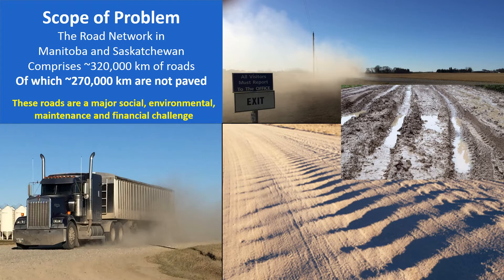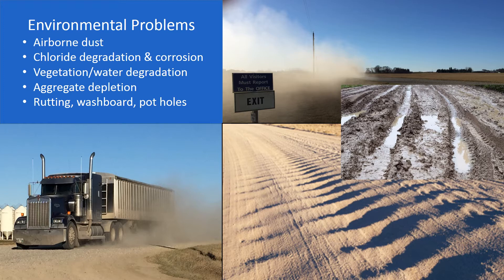As an example of the scope of the problem, the road network in Manitoba and Saskatchewan comprises approximately 320,000 kilometers of roads, of which approximately 270,000 kilometers are not paved. These roads are a major social, environmental, maintenance, and financial challenge, especially to those communities where the population base is very small. Environmental problems include airborne dust, chloride degradation and corrosion where it's used, vegetation and water degradation, aggregate depletion which is becoming a greater concern in many areas, rutting, washboard, potholes, and other issues.